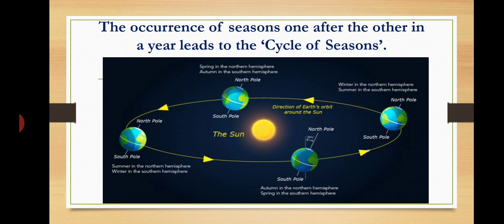The occurrence of seasons one after the other leads to the cycle of seasons. With the help of this diagram, let us know the seasons in the northern and southern hemispheres. In the northern hemisphere: spring equinox prevails from 21st March to 21st June; summer solstice from 21st June to 23rd September; autumn equinox from 23rd September to 22nd December; winter solstice from 22nd December to 21st March. In the southern hemisphere: spring equinox from 23rd September to 22nd December; summer solstice from 22nd December to 21st March; autumn equinox from 21st March to 21st June; winter solstice from 21st June to 23rd September.